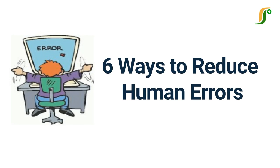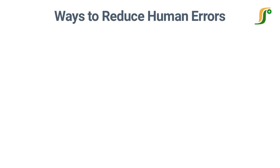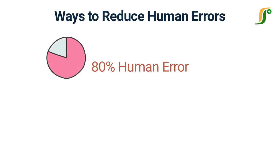Hi friends. Welcome to another learning video on PharmaGuideline. Today we shall discuss different ways to reduce human errors. Human errors have critical effects on pharmaceutical product quality. About 80% of product quality issues occur due to human errors.